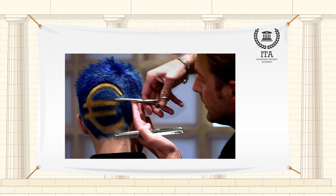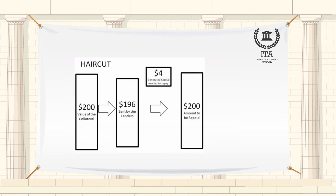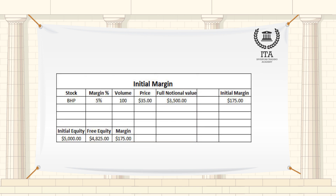A haircut is expressed as the percentage deduction from the market value of collateral, while an initial margin is the market value of collateral expressed as a percentage of the purchase price.